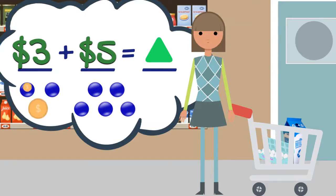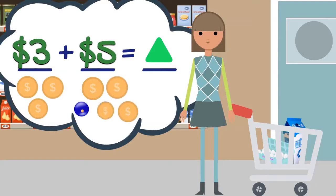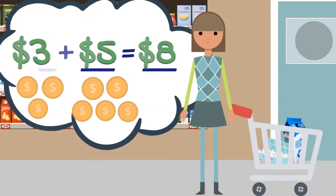1, 2, 3, 4, 5, 6, 7, 8. These two items cost $8. We just used a drawing to show that 3 plus 5 equals 8. Let's head to the register to solve our second problem.